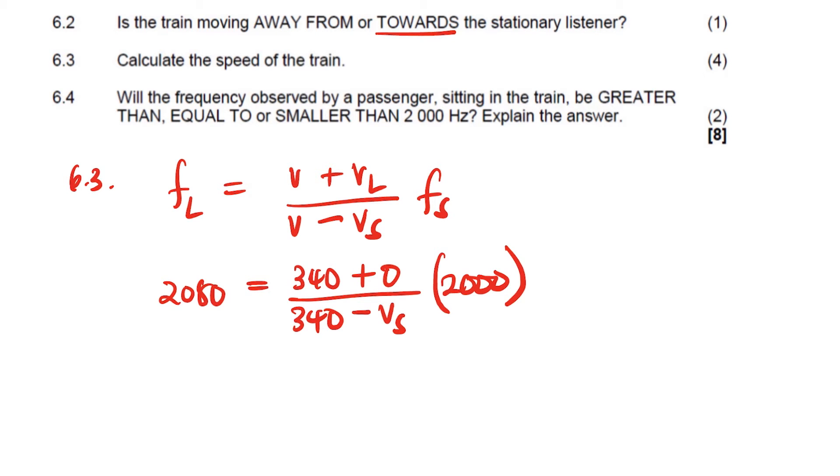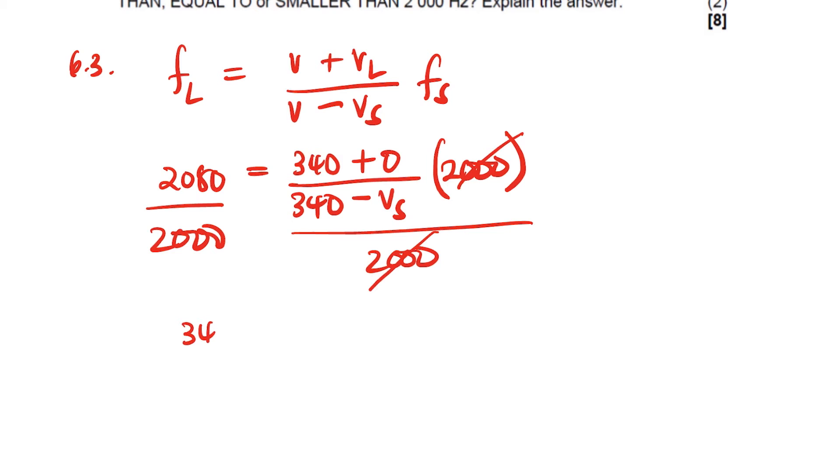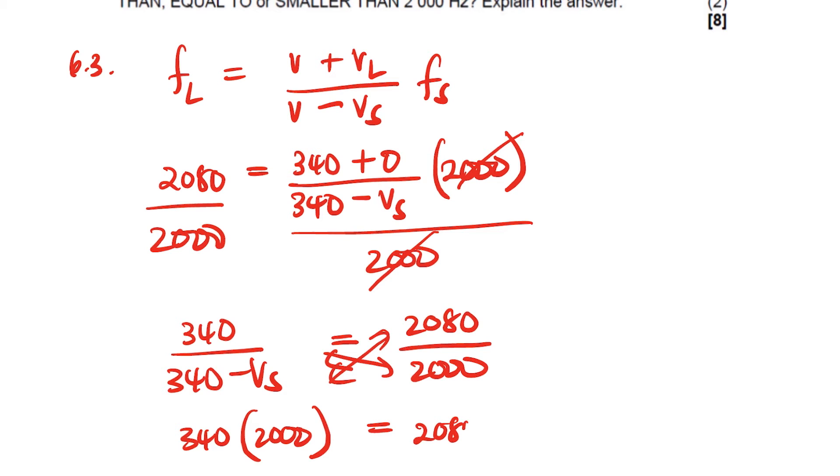So what are we going to do? Since our unknown is in this side, we'll divide by 2,000 here to make our life easy. Or we'll multiply it by 1 over 2,000. This and this will cancel. Right? And then we're going to have 340 divided by 340 minus Vs is equal to 2,080 divided by 2,000. And then we cross multiply there. We cross multiply. So when we cross multiply, we'll have 340 times 2,000. And then equal to, we'll cross multiply by that. So guys, if you have a better method there, you can do it. This is no longer physics now, it's mathematics.